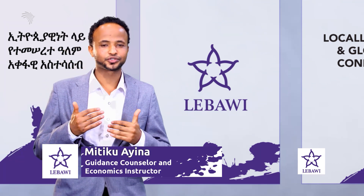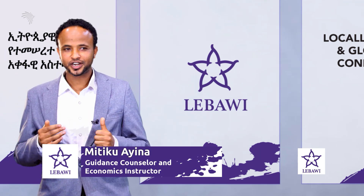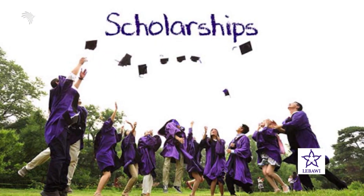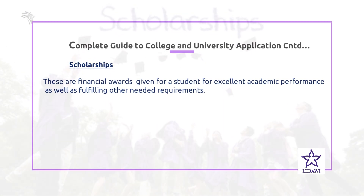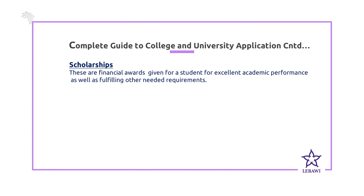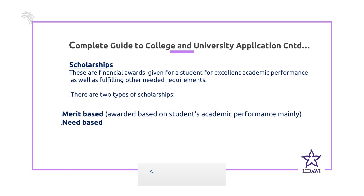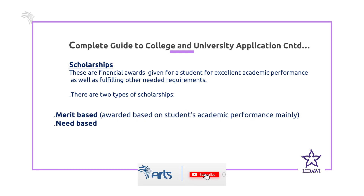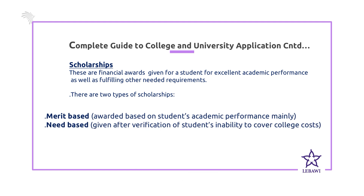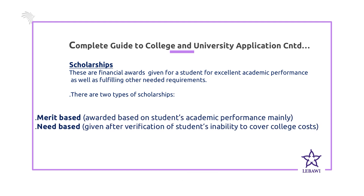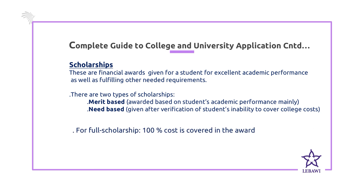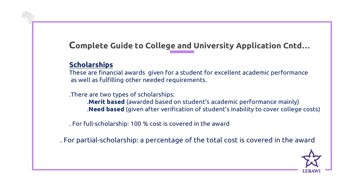Scholarships are awards given to a student for excellent academic performance as well as fulfilling other needed requirements. There are two types of scholarships: merit-based and need-based. A merit-based scholarship is an award based mainly on students' academic performance, while a need-based scholarship is given after verification of the student's inability to cover college costs. For a full scholarship, 100% of the cost is covered, while for a partial scholarship, only a percentage of the total cost is covered.